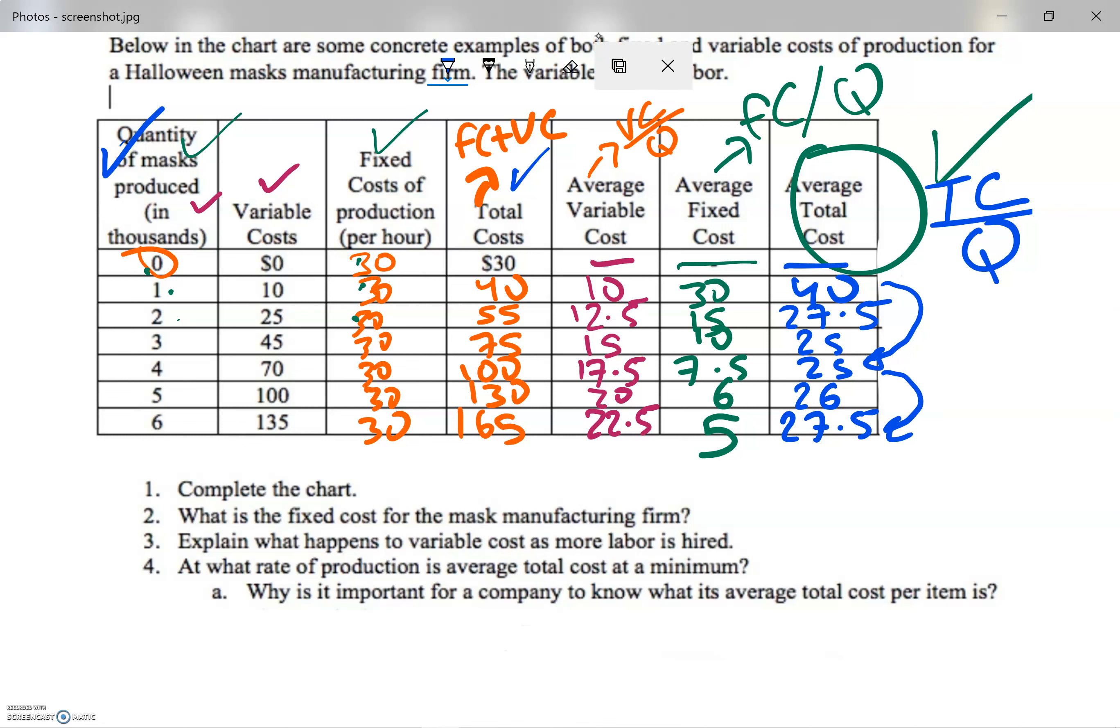So let me answer the questions. Number one - complete the chart. I am done. What is the fixed cost for the mask manufacturing firm? As you can see, no matter what the unit of production, it is always 30 in this example. So, $30.